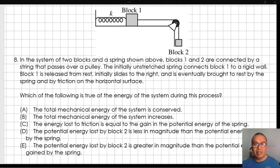In the system of two blocks and the spring shown above, blocks 1 and 2 are connected by a string that passes over a pulley. The initially unstretched spring connects block 1 to a rigid wall.